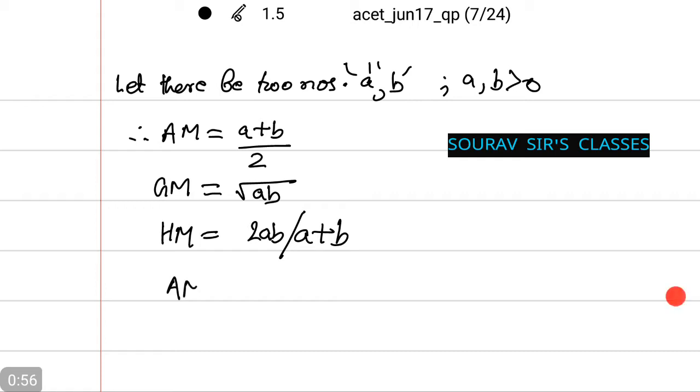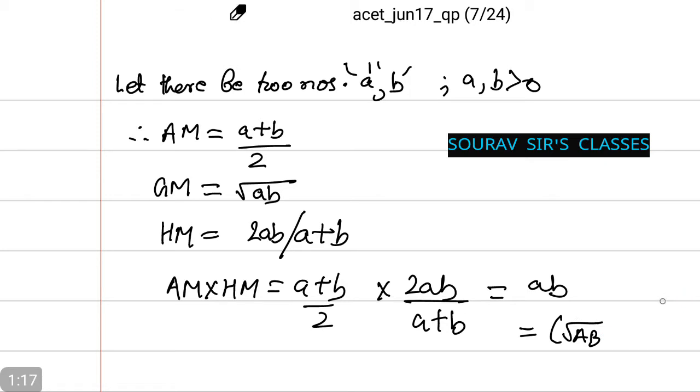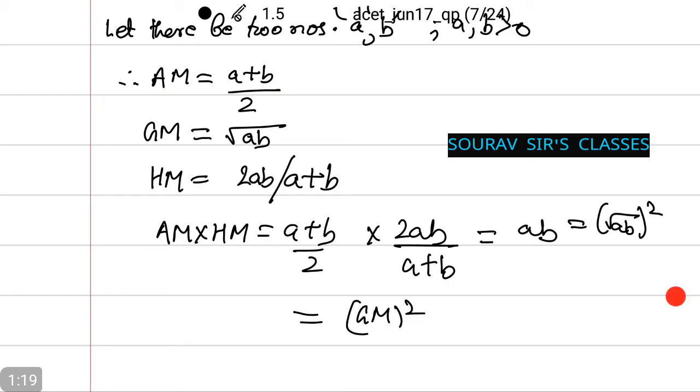Therefore, AM into HM equals a plus b by 2 into 2ab by a plus b. And thus, this comes to ab which equals root over ab which equals GM squared. And that means both HM and AM are in geometric progression. Hence, AM, GM, HM follows the rules of GP series.